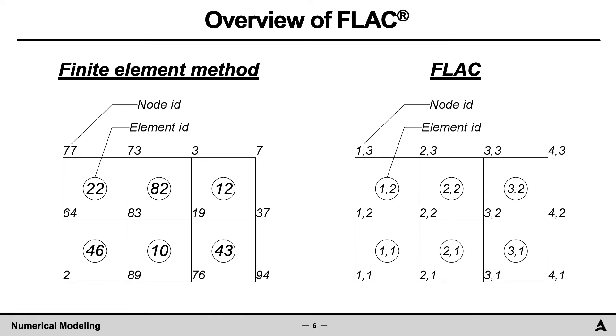Identifying nodes in zone and FLAC is different than in the finite element method. This is highlighted here for the domain composed of six quadrilateral elements. In the finite element method, the elements are identified by numbers such as 46, 10, 43, 22, 82, and 12. The node numbers are also shown. For a particular element, for example, element 82, the associated nodes are 83, 19, 3, and 73.